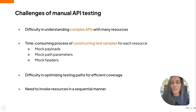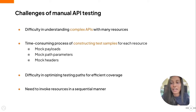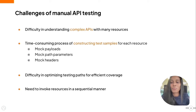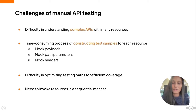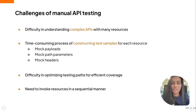Let's talk about the challenges of manual API testing. Imagine there was an API which had multiple resources. Going through each of those resources to figure out the payloads and the parameters that were needed to invoke them, and then the time-consuming process of constructing test samples for each of those resources — that was a task that the API consumer had to do. And the difficulty in optimizing testing paths for efficient coverage, figuring out what resources and what path to follow in order to get there, and invoking those resources one after the other.